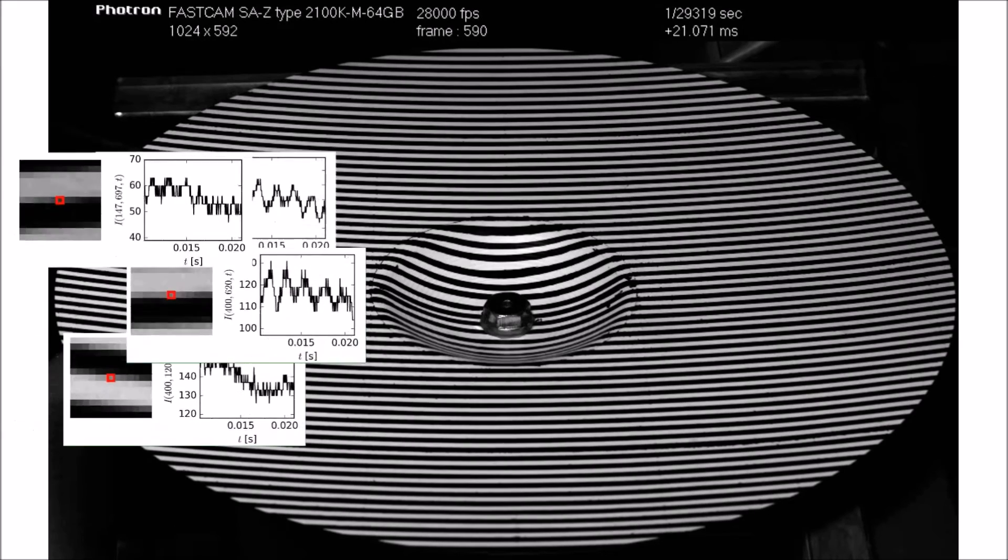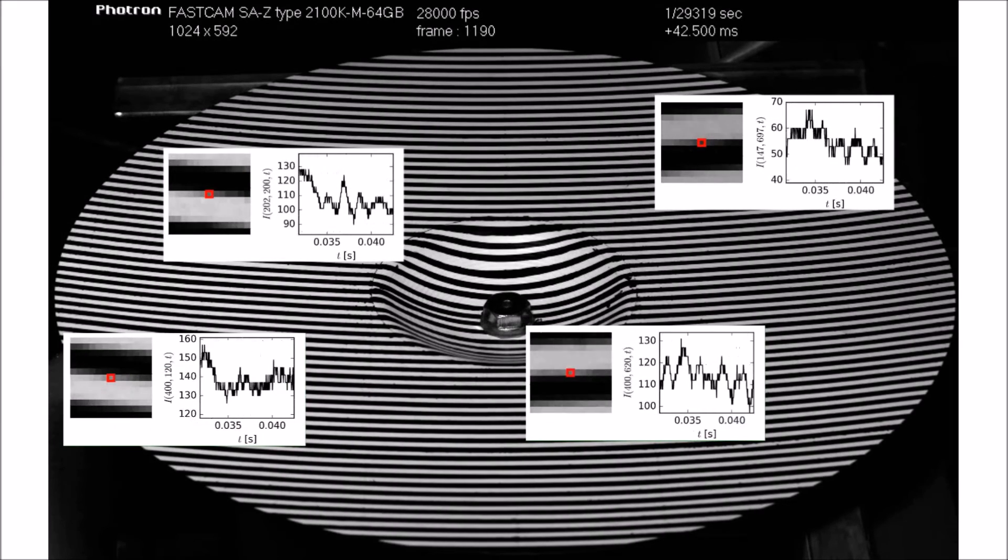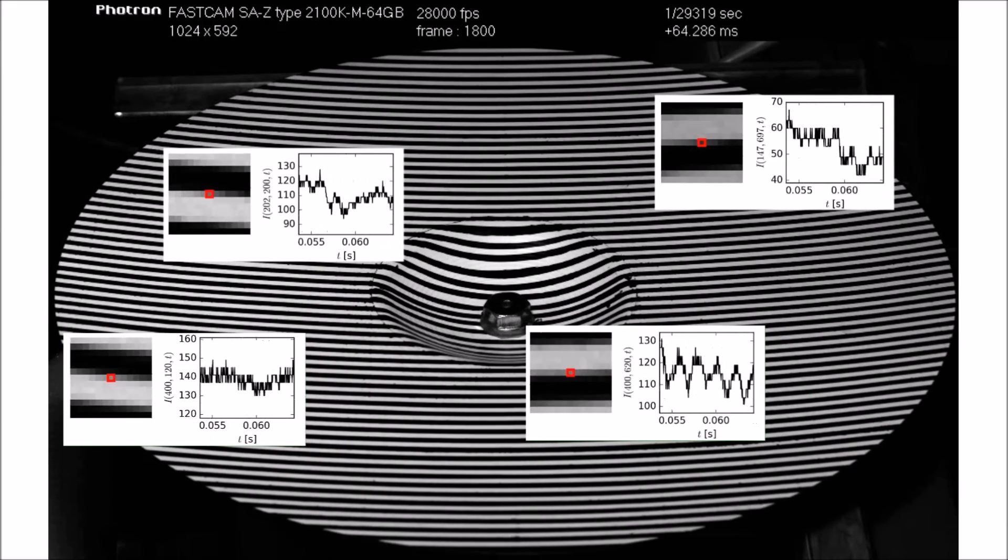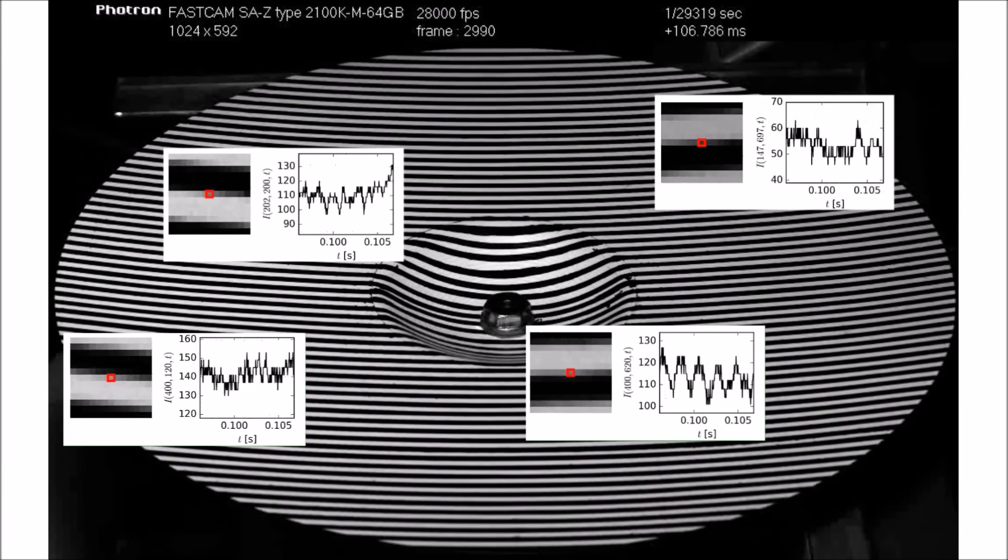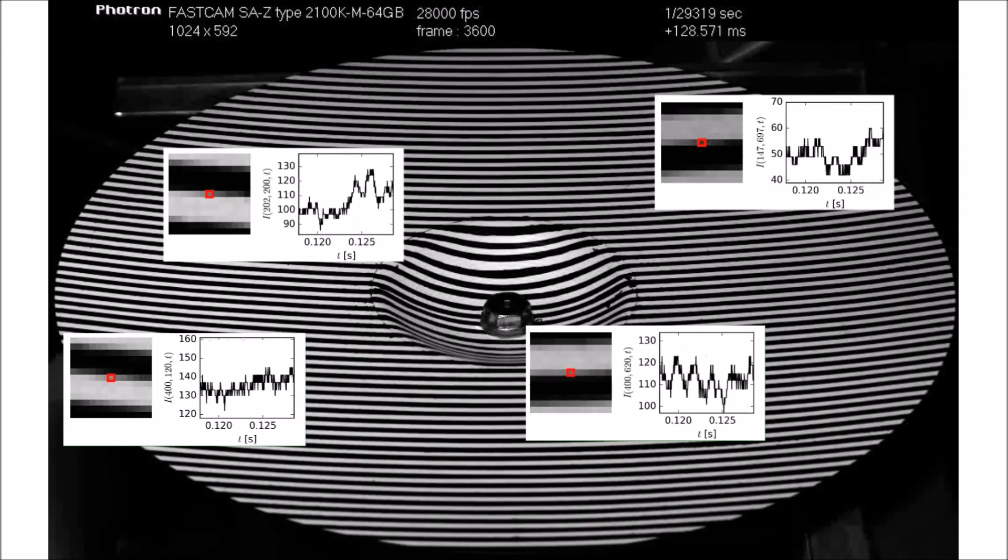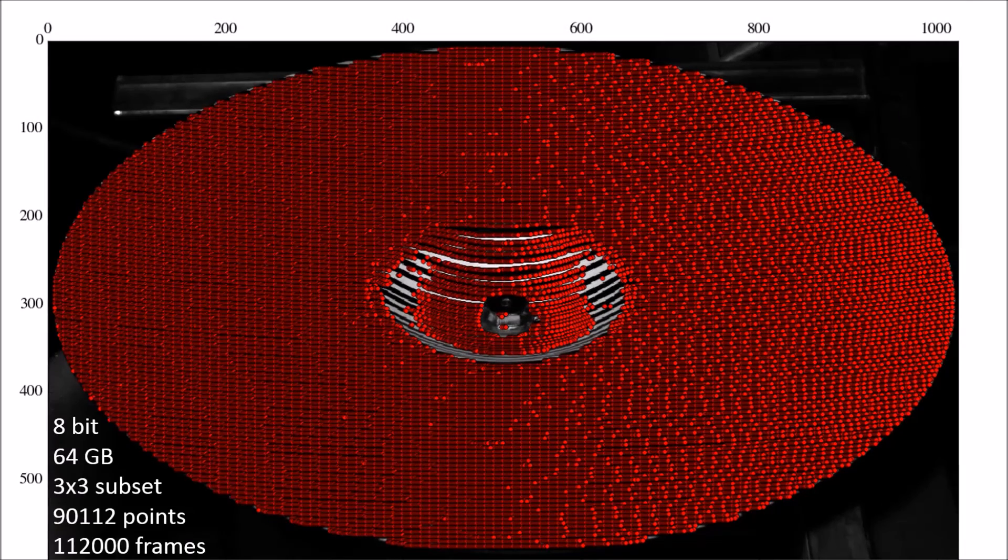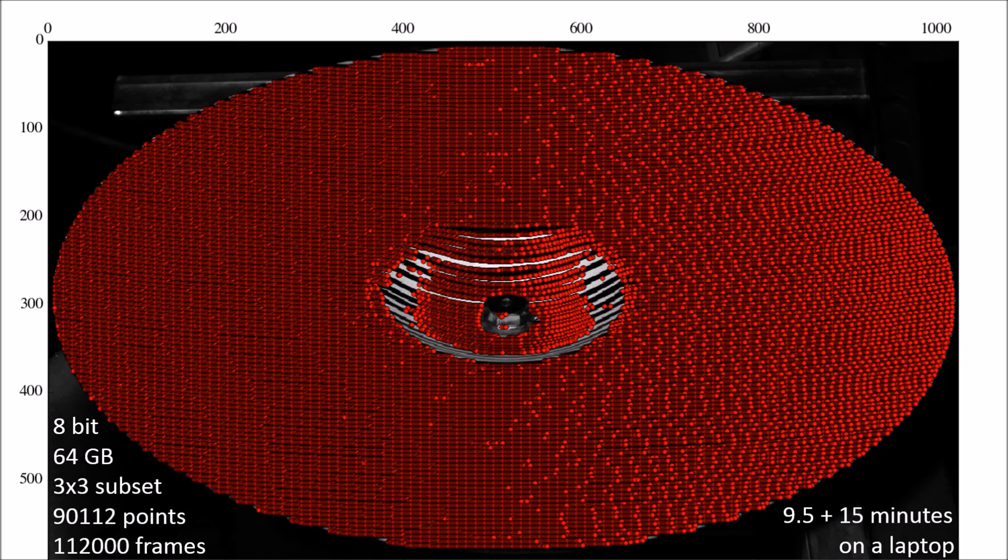Here, optical flow was used to identify the out-of-plane vibrations of a cymbal excited by a shaker. The video was filmed at an 8-bit intensity resolution and produced 64 gigabytes of data. The displacements were identified at over 90,000 points for 112,000 frames.